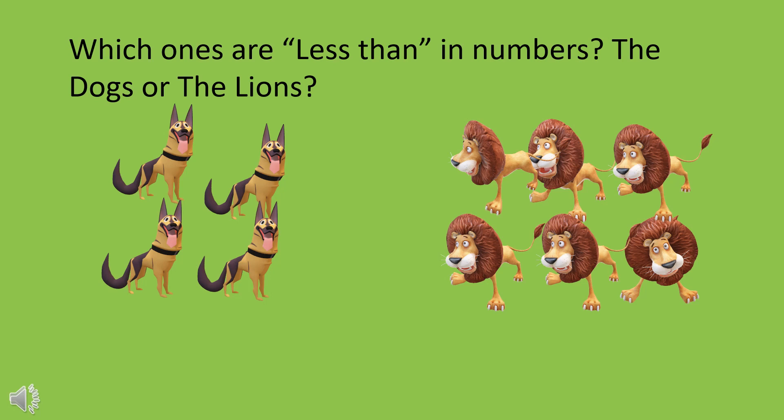Now answer this: which ones are less than in numbers, the dogs or the lions? The answer is the dogs are less than the lions, because the dogs are four and the lions are six, so four is less than six.